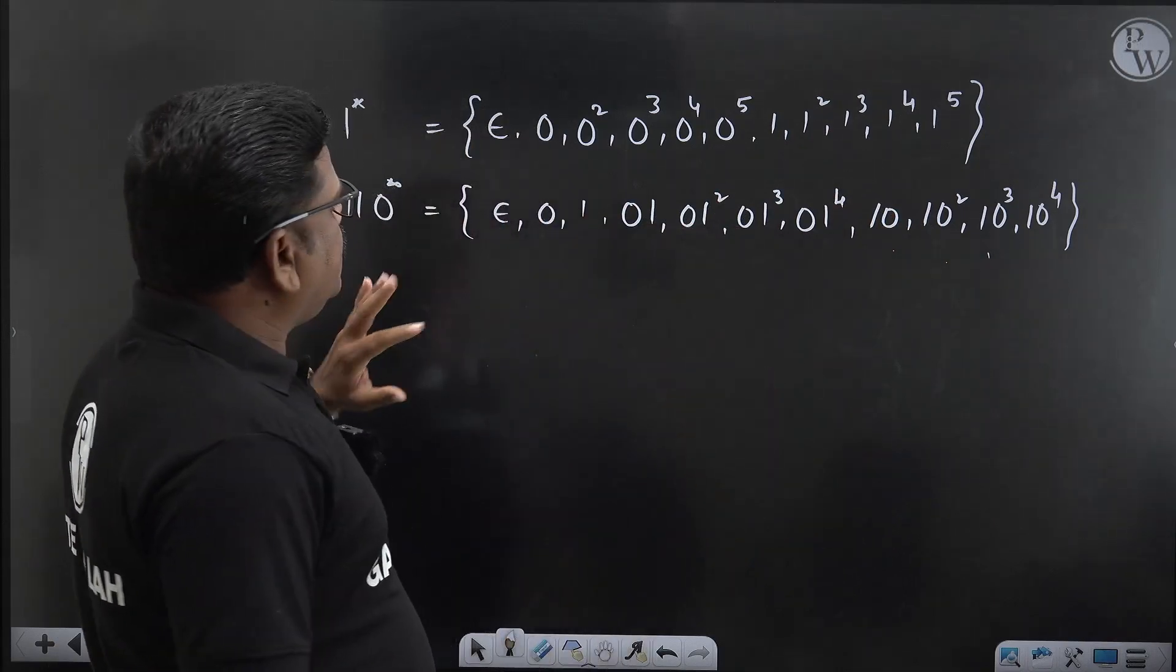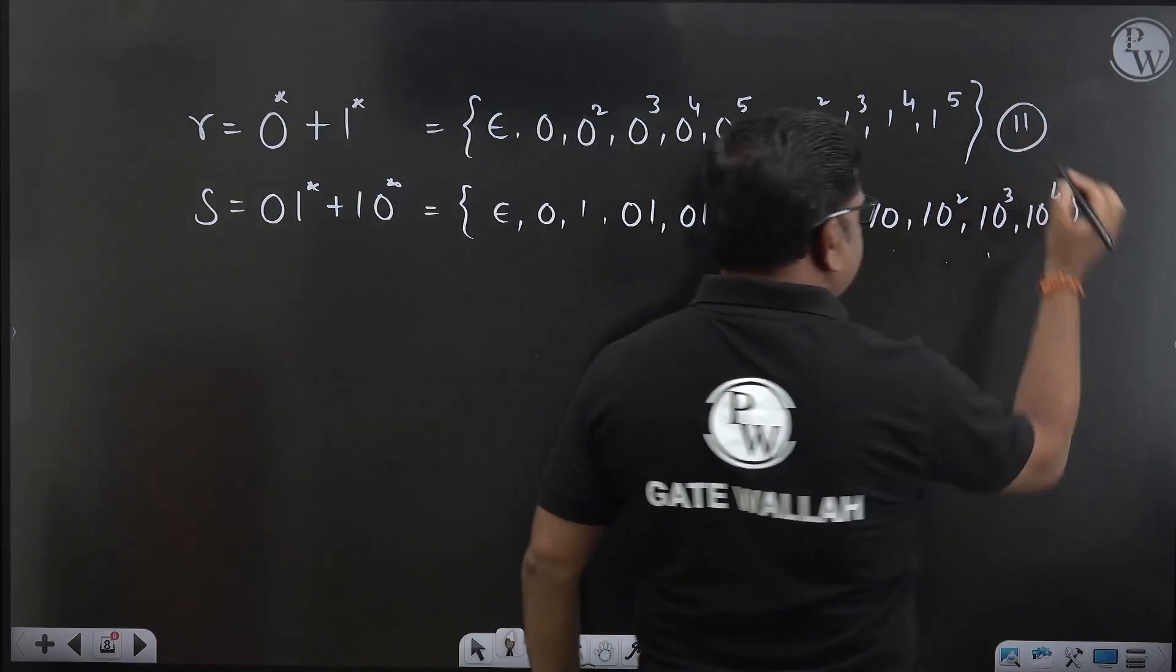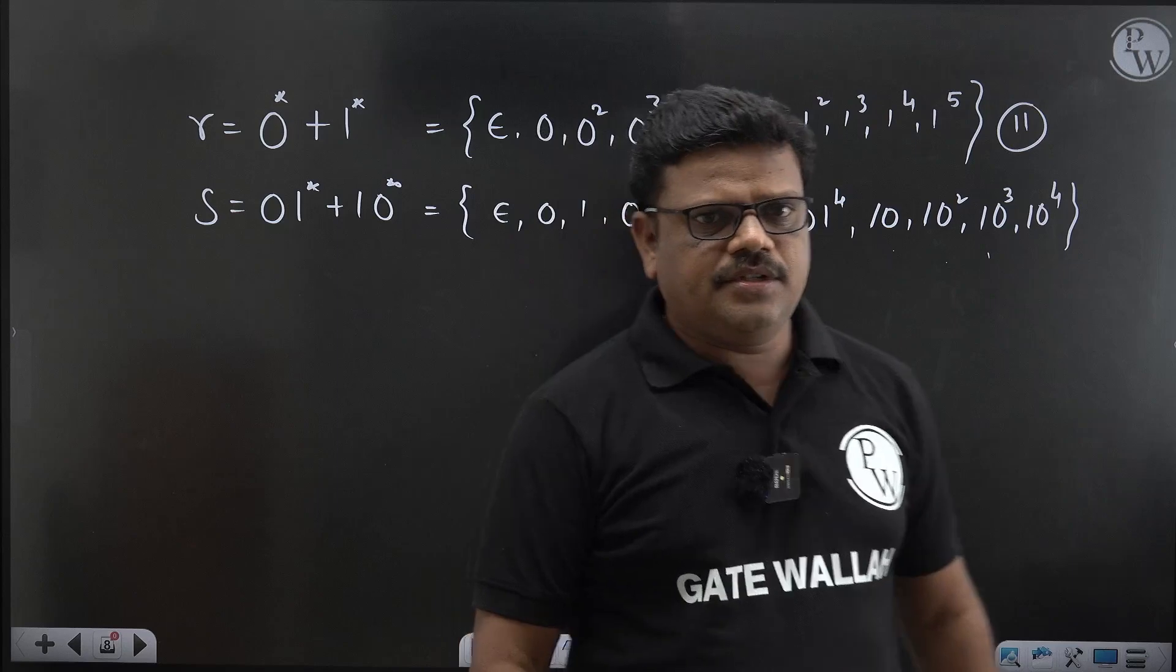In R total how many strings are there here? 11 strings, there are 11 strings in R.